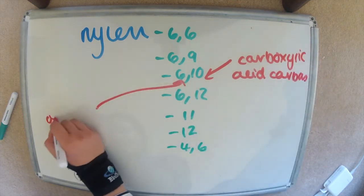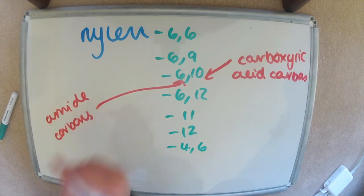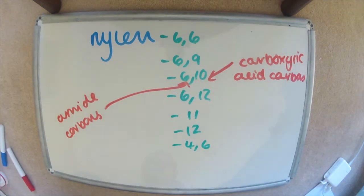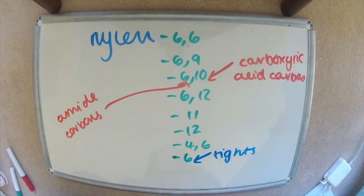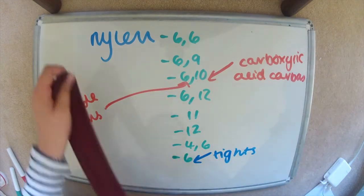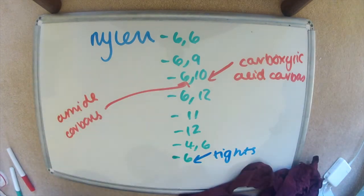So here I'm just showing you what the numbers mean. So number of carbons in that molecule. I've got 6. So nylon 6 is most commonly used for tights, and it's the way it's woven and you get the stretchy thing.